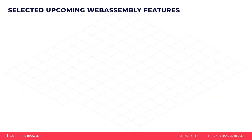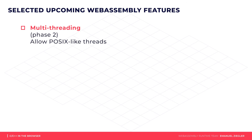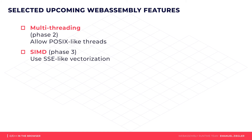WebAssembly also has a lot of features to offer. Some were already part of its initial release; others are still being developed and standardized. Multi-threading is already available for testing and allows you to parallelize your application using well-known thread implementations like Pthreads or C++ threads. SIMD allows vectorization of code for multimedia or other high-performance applications and is also available for testing.